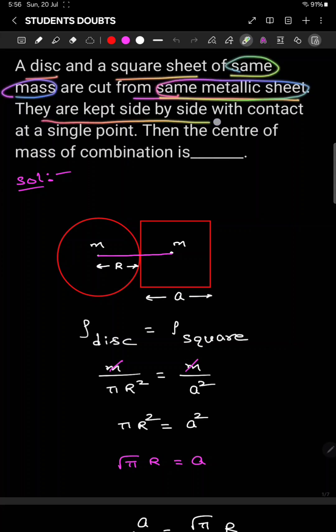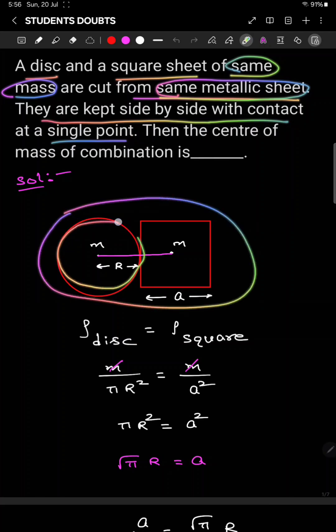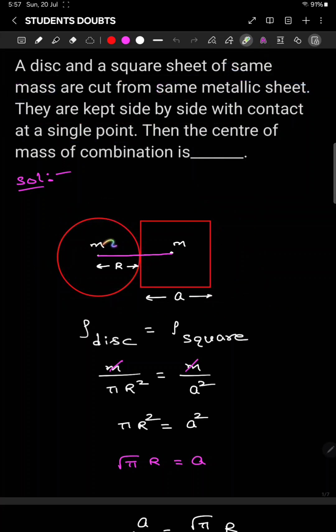They are kept side by side with contact at a single point like this. It was a disc, it was a square plate kept in contact here. Both having same mass and both made up of same metal sheet. That means both will have density same.